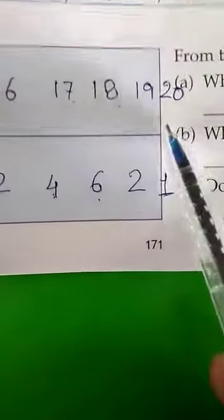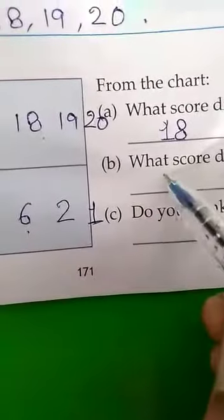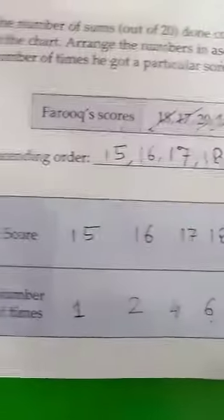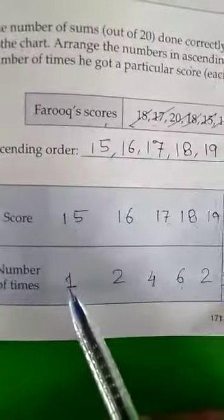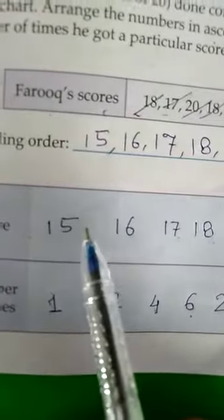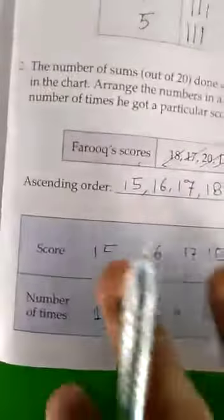Question B: what score did he get least often? He got both 15 and 20 only one time each, so the answer is 15 and 20. Question C: do you think he is good in maths? Yes, he is good in maths — you can see that he scores out of 20: 15, 16, 17, 18, 19, and 20, all consistently high. So yes, I think he is good in maths. Question 2 is now completed.